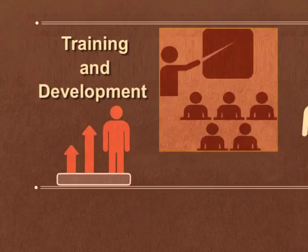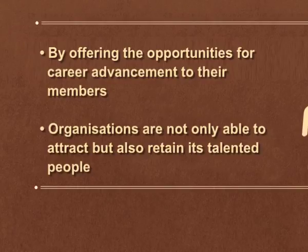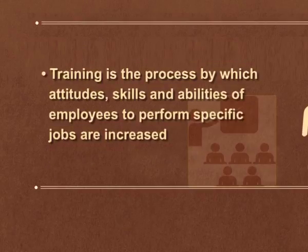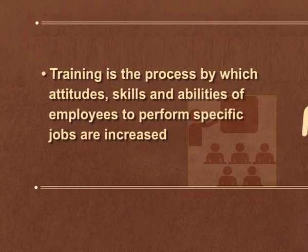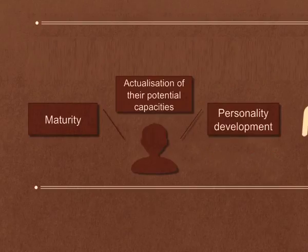Step number five is training and development. Employees need to learn new skills, which is beneficial for both the employee's career growth and the organization's growth. By offering opportunities for career advancement, organizations not only attract but also retain talented people. Training is a process by which the attitude, skills, and abilities of an employee to perform a particular job are enhanced. Development is a broader concept — it refers to learning opportunities designed to help employees grow and take up higher jobs in future. It is related to the maturity level and personality of an employee, making it more career-oriented.